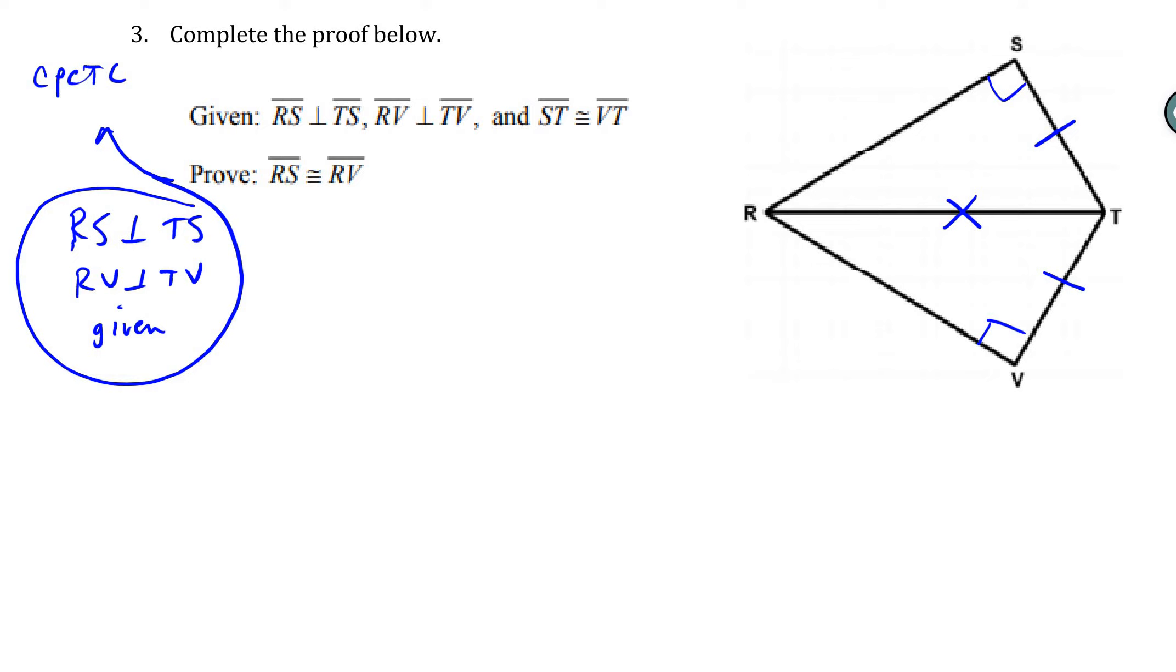And we can say that angle S and angle V are right because perpendicular lines form right angles.